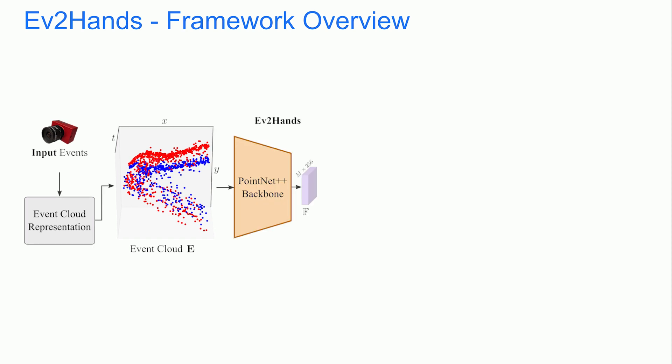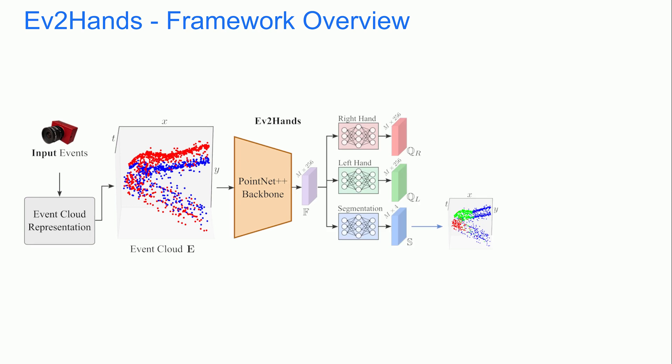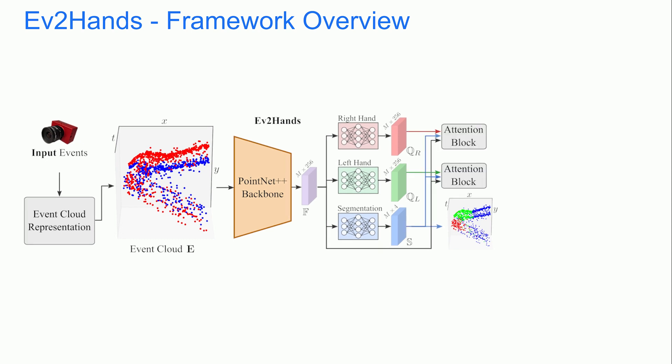It is passed to a PointNet++ backbone to extract the point features. To obtain individual hand-specific features, we query the point features with hand-specific MLPs. Moreover, an additional MLP generates segmentation labels by classifying the events as triggered by left or right hands or caused by noise or changes in the background. We use a novel feature-wise attention block to identify features that are more relevant to specific hands or hand interactions.